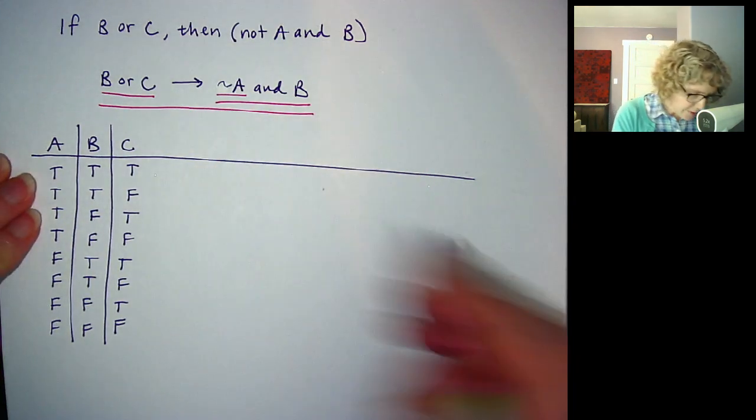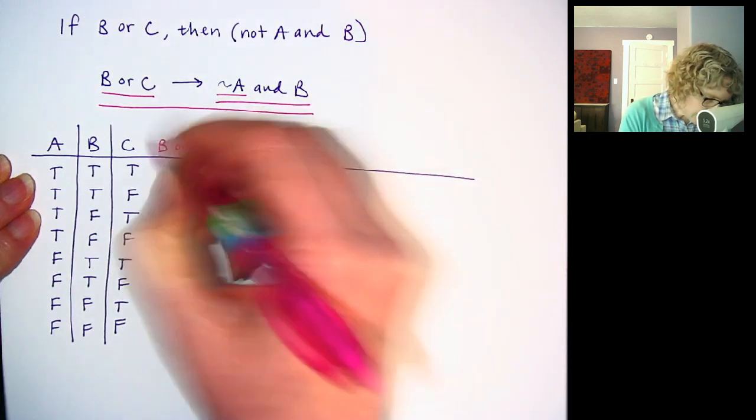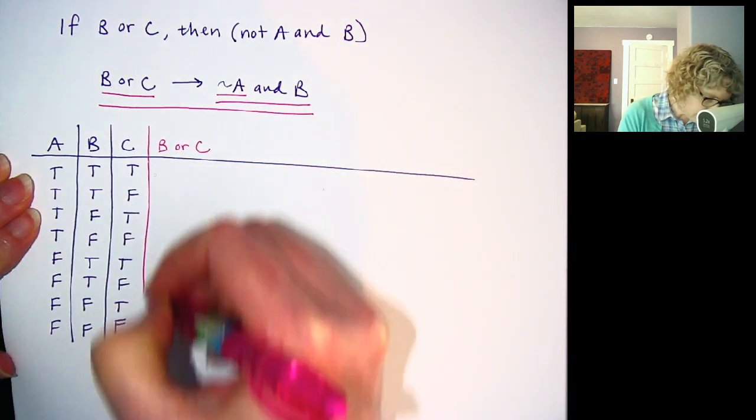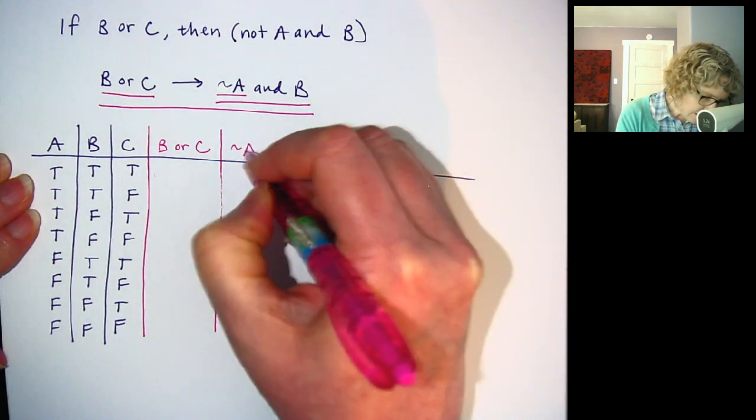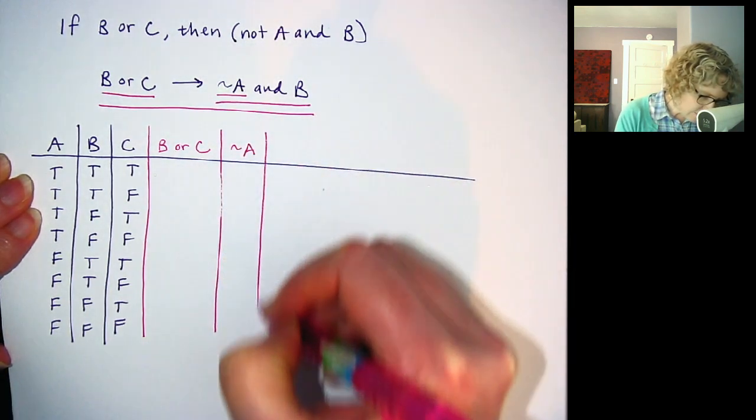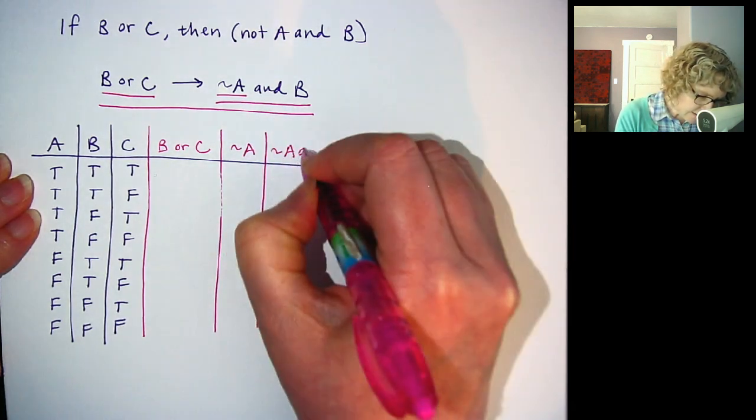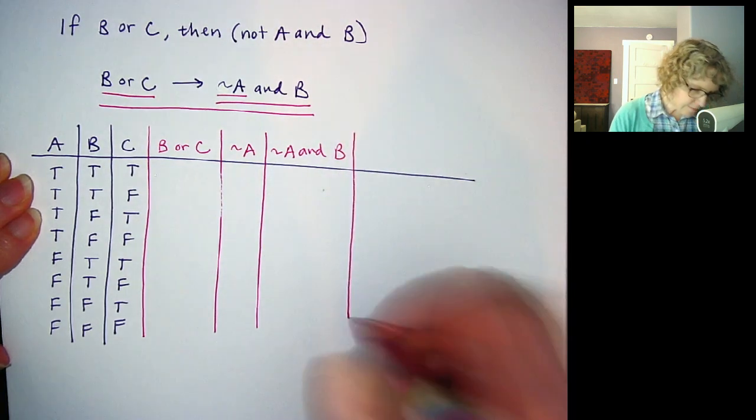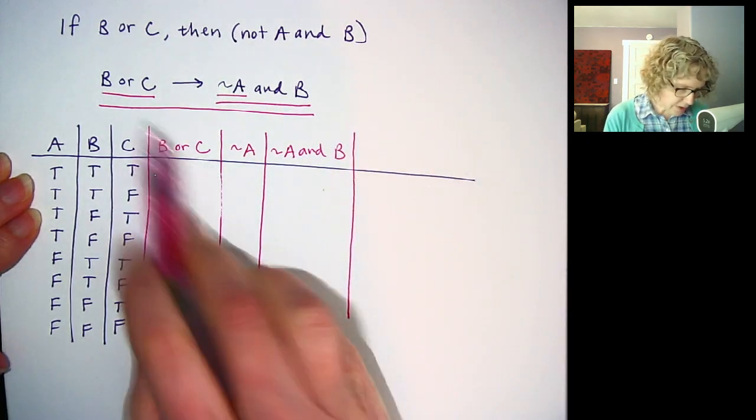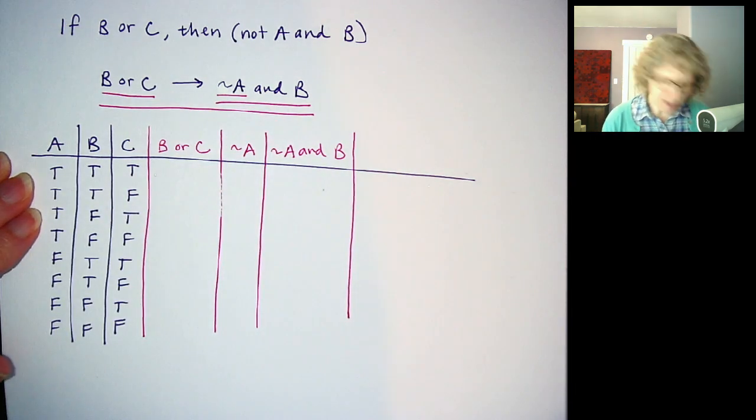Okay, so I'm going to make first a B or C column. Then I'm going to do not A. Then I'm going to do not A and B. Okay, I think I have everything. This one, this one, this one, that one.